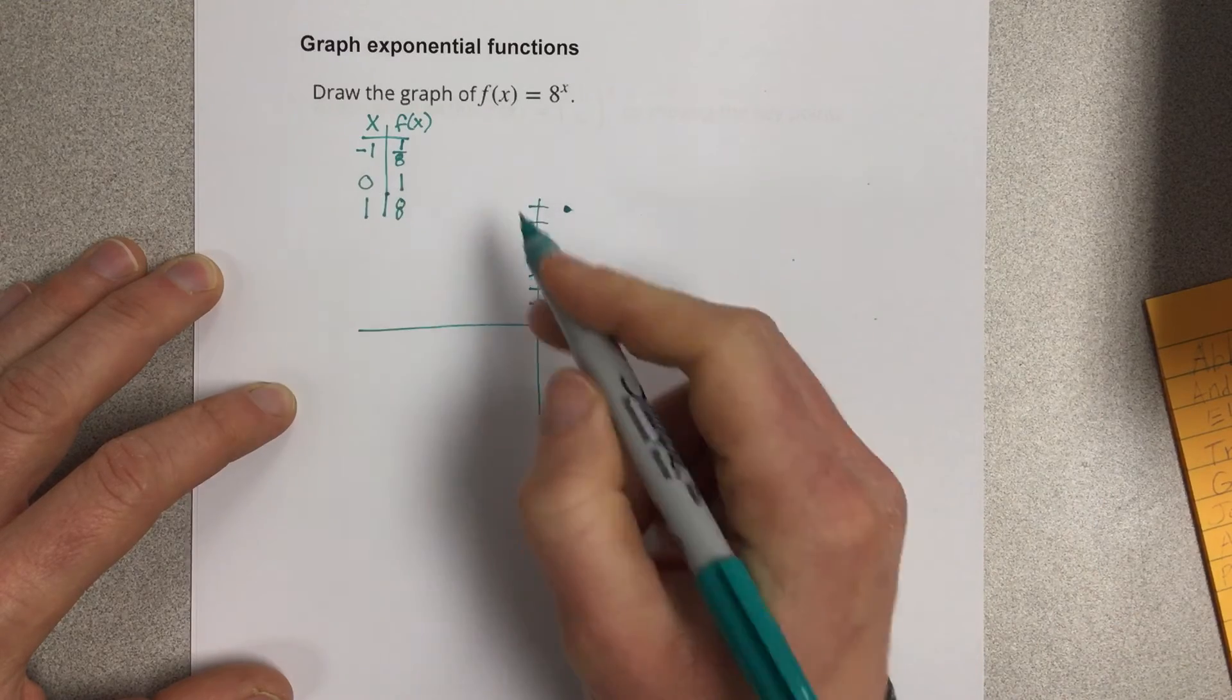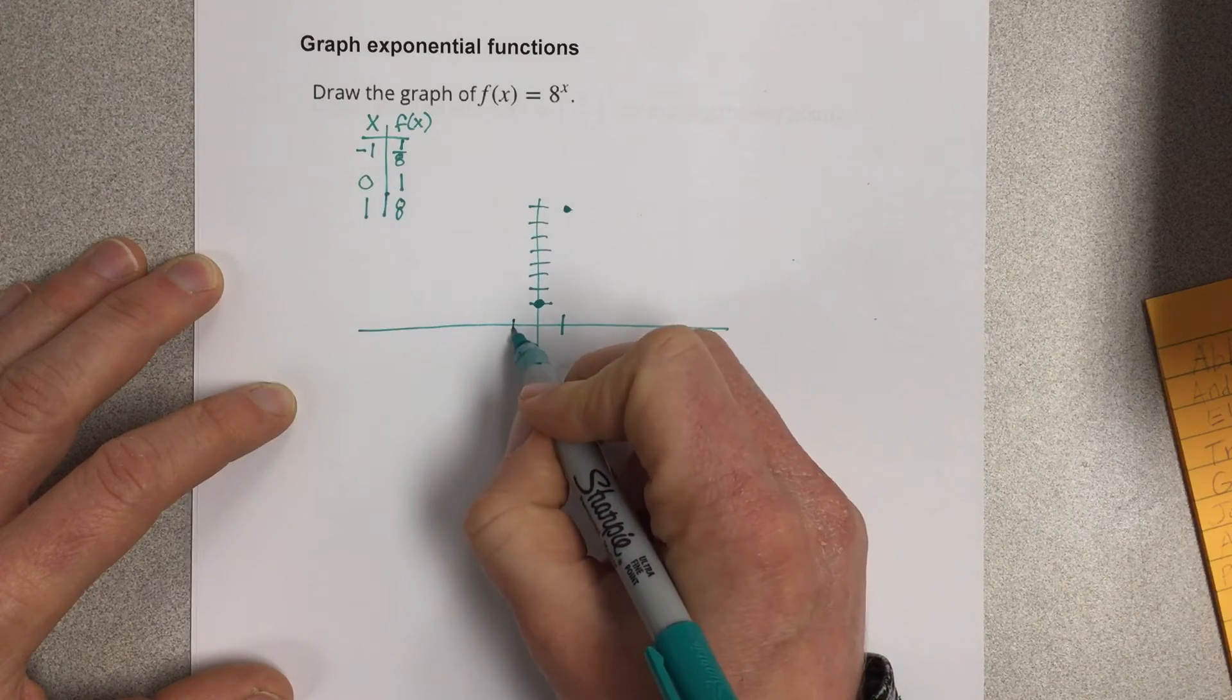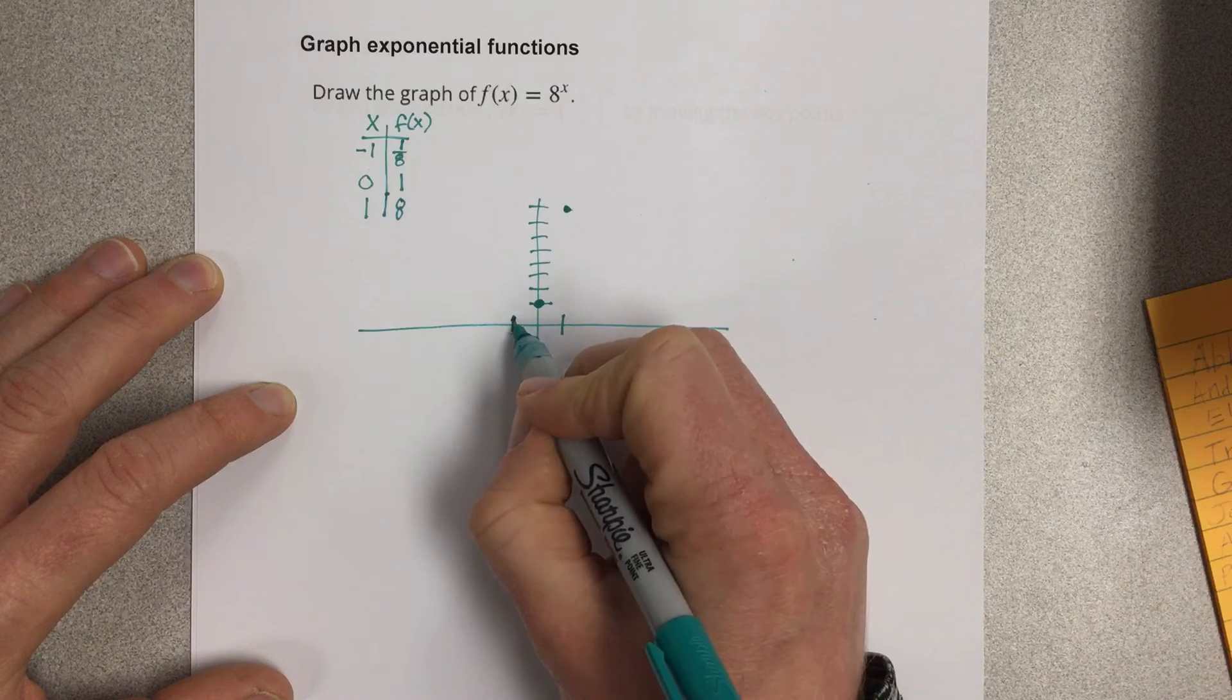And then we need to mark negative 1, 1/8. So negative 1 and 1/8 would be about right here.